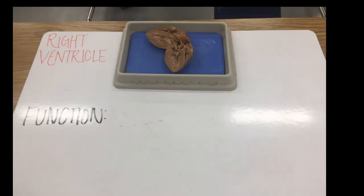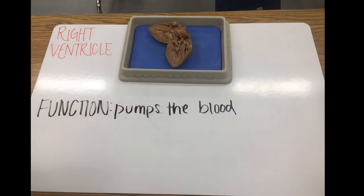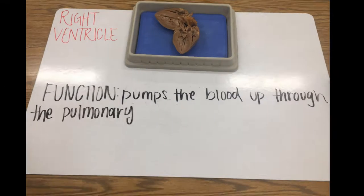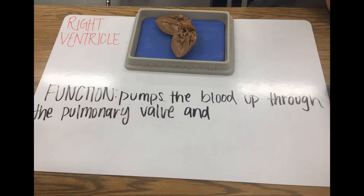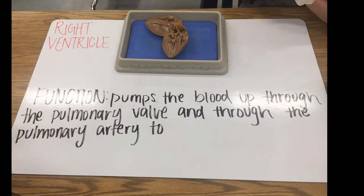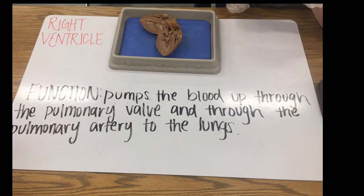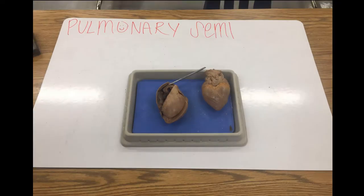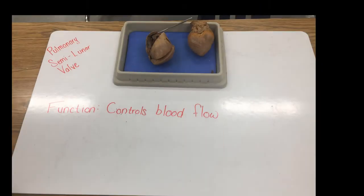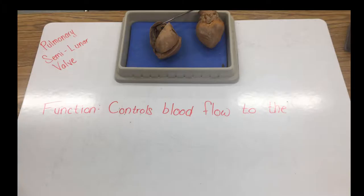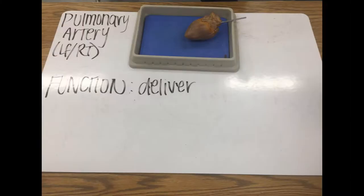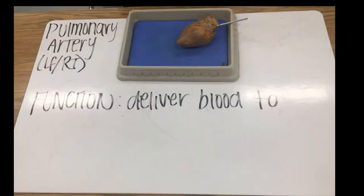From there, it is pumped through the pulmonary valve into the pulmonary artery. The pulmonary semi-lunar valve is what controls the blood flow from the right ventricle through to the pulmonary artery. The pulmonary artery is the artery that delivers the blood from the right ventricle to the lungs.